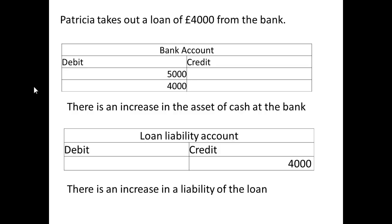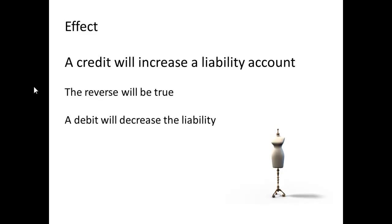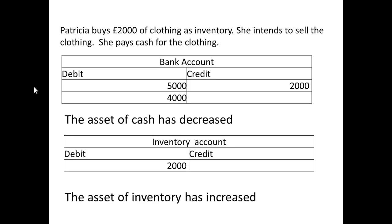Parishia now takes out a loan of £4,000 from the bank. We have another debit into the bank account because we've increased the asset of cash again. And of course we've increased the liability, so we credit the loan account. Credits increase liability accounts; debits will decrease the liability account.